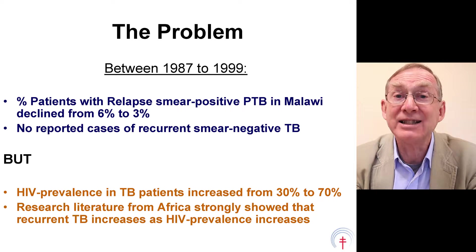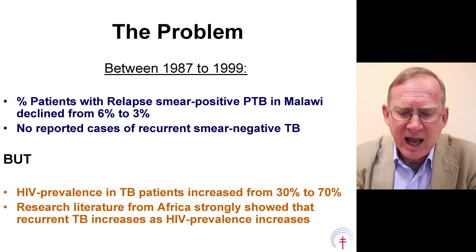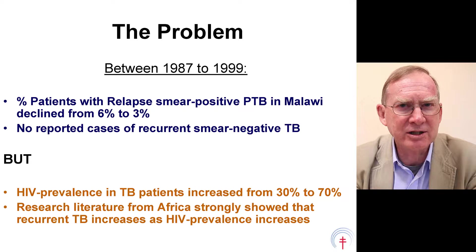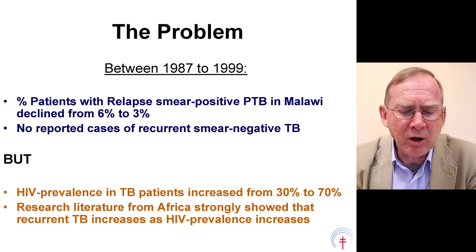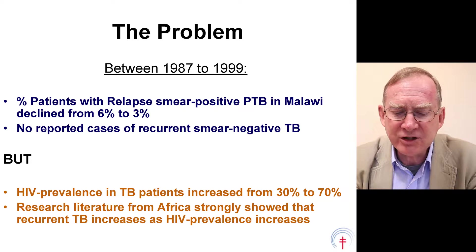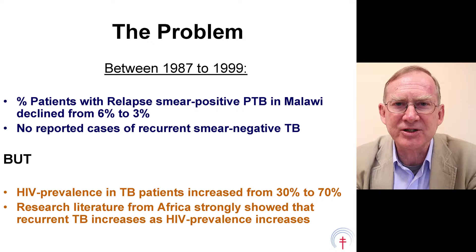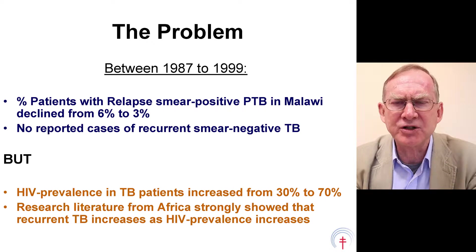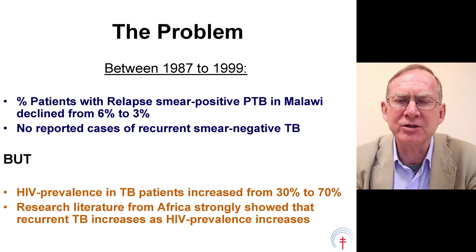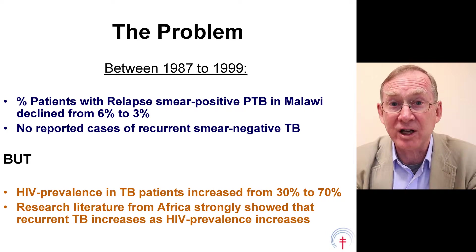By recurrent we mean a second episode. However, HIV prevalence in TB patients in Malawi had increased during these 12 years from 30% to 70%. And there had been a number of very good clinical research studies done in sub-Saharan Africa showing strongly that recurrent tuberculosis increased as HIV prevalence increased. So this was a paradoxical situation where we should be expecting to see more recurrent tuberculosis, more relapse tuberculosis, but we were seeing the converse — a decline.